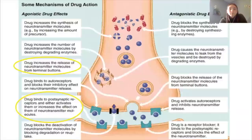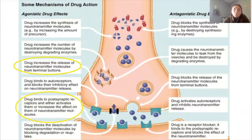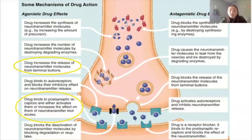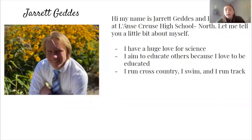Drugs have the ability to do many other things beyond binding to receptors. They can increase the number of neurotransmitter molecules by destroying degrading enzymes, so more neurotransmitters get released and the signal gets passed on more. A drug can increase the release of neurotransmitter molecules from the axon terminals, or the drug could bind to postsynaptic receptors and either activate them or increase the effect of neurotransmitter molecules on them. Drugs are very dangerous, and neurologically this is how they work. I'm going to pass it on to Jarrett to continue explaining how these drugs really work.